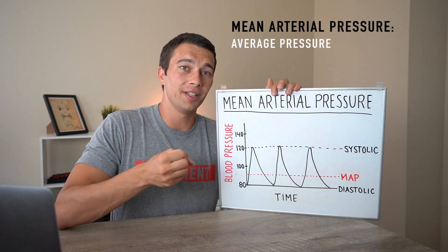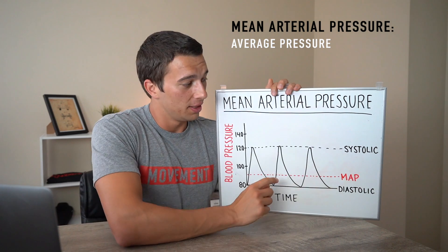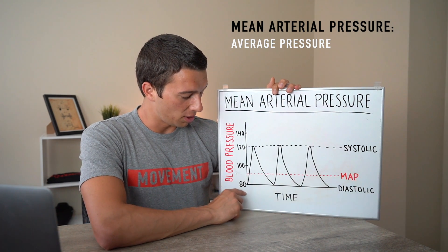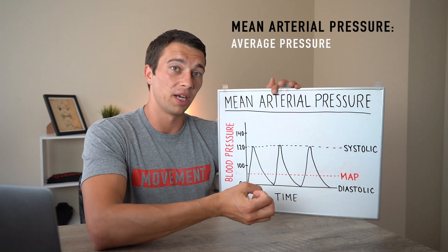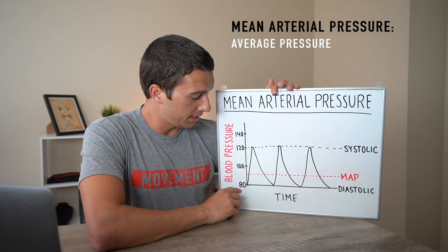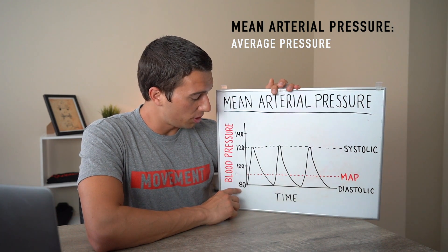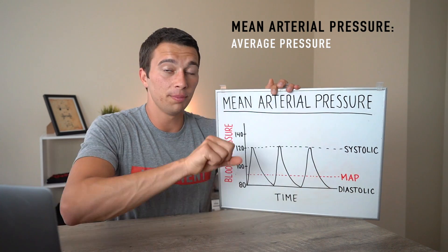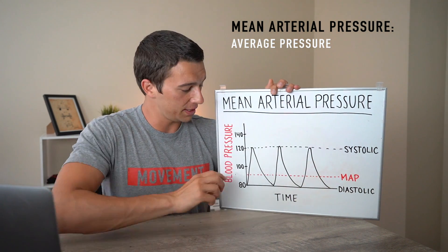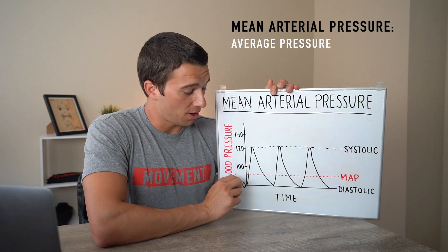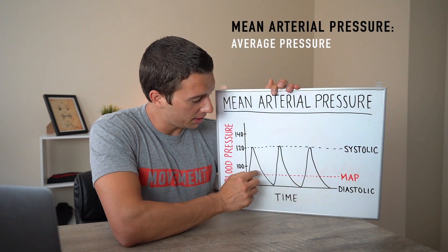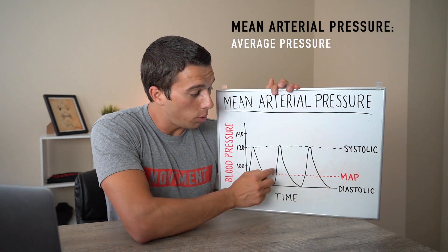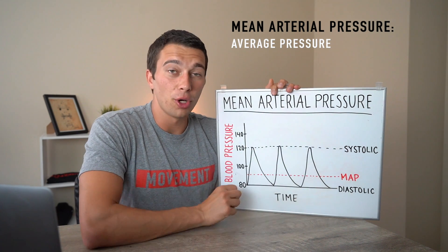Looking at this graph, 80 mmHg is our diastolic — the lowest pressure in the arteries as the heart chamber is filling. During systole, as the heart contracts and pushes blood into the aorta and arteries, pressure rises to 120. We spend a longer time in the filling phase dropping back down to diastole than we do in the quick jump up to systole.